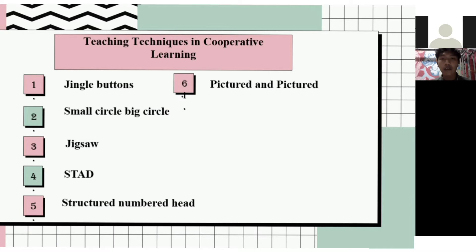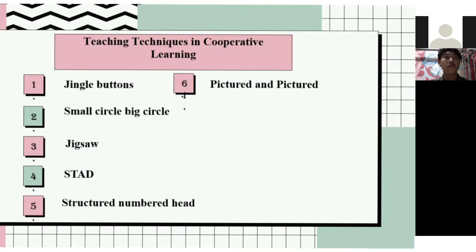The next element is face-to-face interaction. In cooperative learning, each group must be given the opportunity to meet face-to-face and discuss. This interaction will provide learning to perform synergies that benefit all members — the essence being to appreciate differences, take advantage of strengths, and fill in weaknesses.